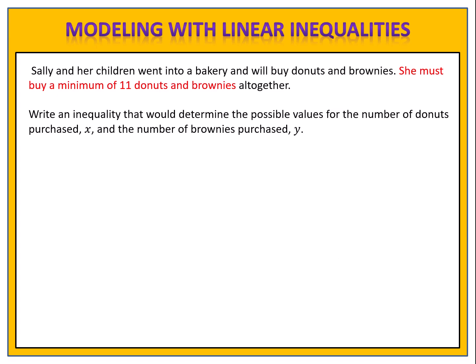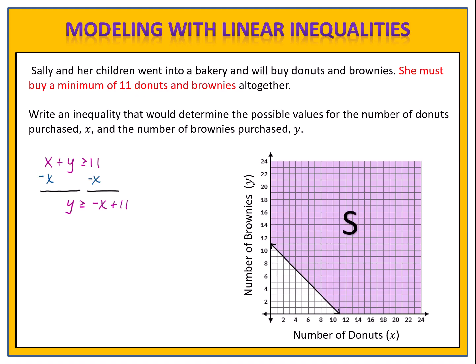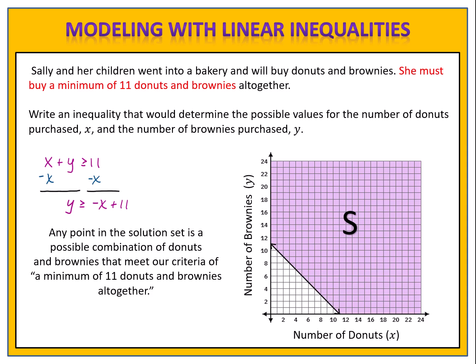We can use this inequality to come up with pairs for X and Y that would meet the constraints. If we rewrite the inequality in slope-intercept form, construct the graph, and identify the solution set, we see that the points in the solution set are the possible combinations of donuts, X, and brownies, Y, that meet our criteria. For example, the point (9, 7) is in the solution set — that represents 9 donuts and 7 brownies, meeting the criteria of a minimum of 11 items. Similarly, the point (14, 3) represents buying 14 donuts and 3 brownies, which once again meets the criteria.